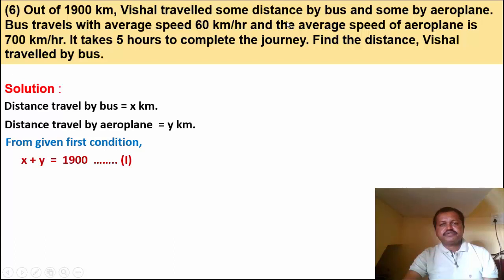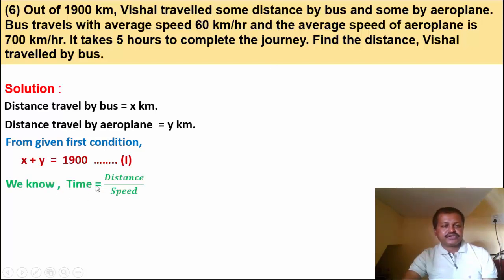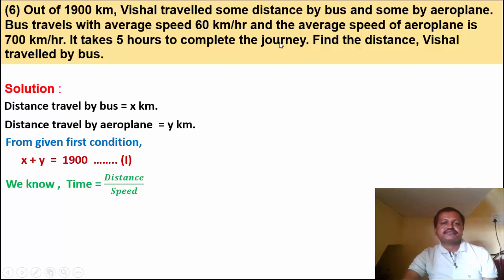We use the formula: time equals distance upon speed. Since total journey time is 5 hours, we form equation using time for bus and aeroplane separately.